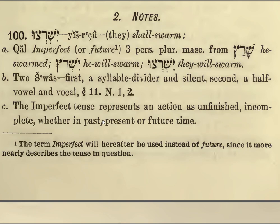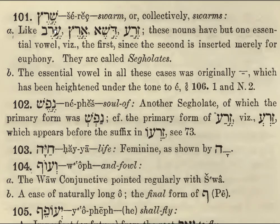The imperfect tense represents an action as unfinished, incomplete — whether in past, present, or future time. So usually future, but sometimes not, depending on the context.